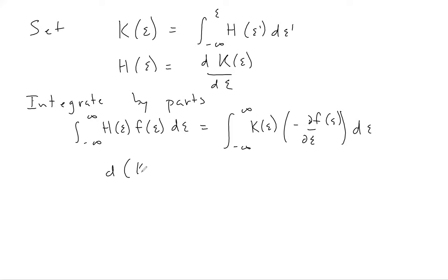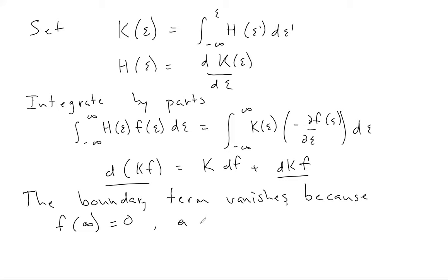So let me just use a shorthand to indicate that the derivative of K times F is equal to K times the derivative of F plus the derivative of K times F. The thing that we care about is the integral of H times F, which is this term here. So this is equal to the derivative of K times F minus K times the derivative of F, which is what we've written here. The integral that results from this boundary term vanishes.